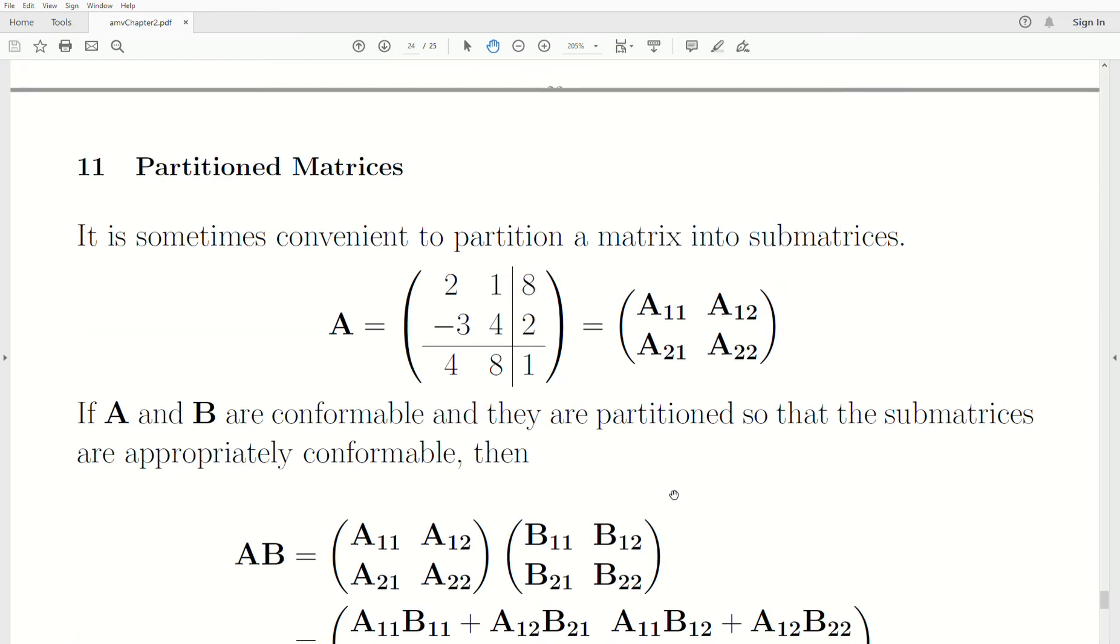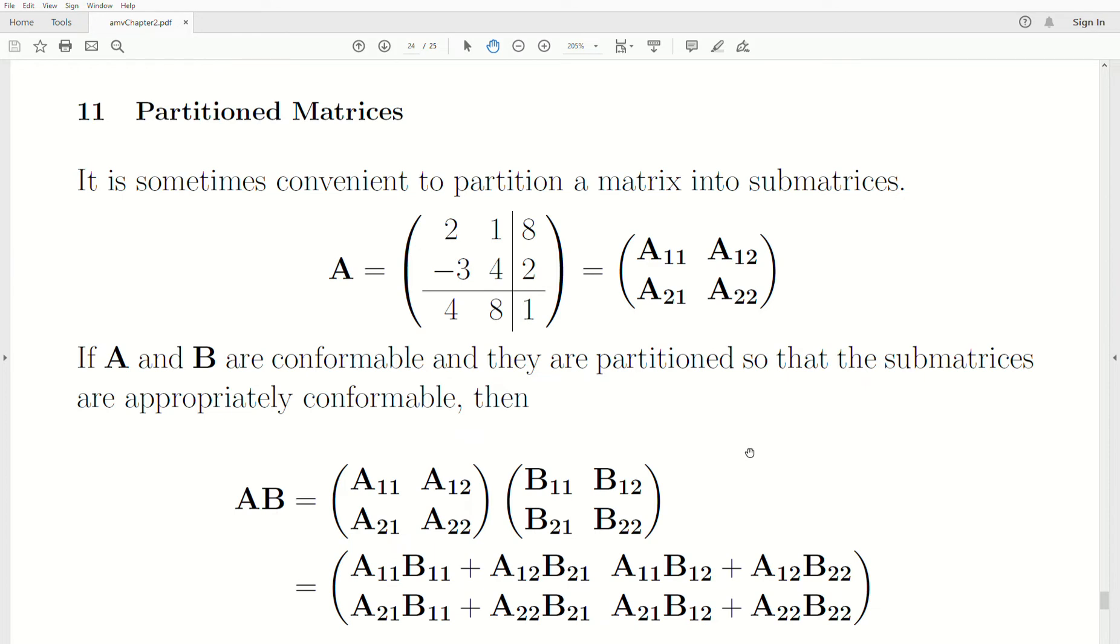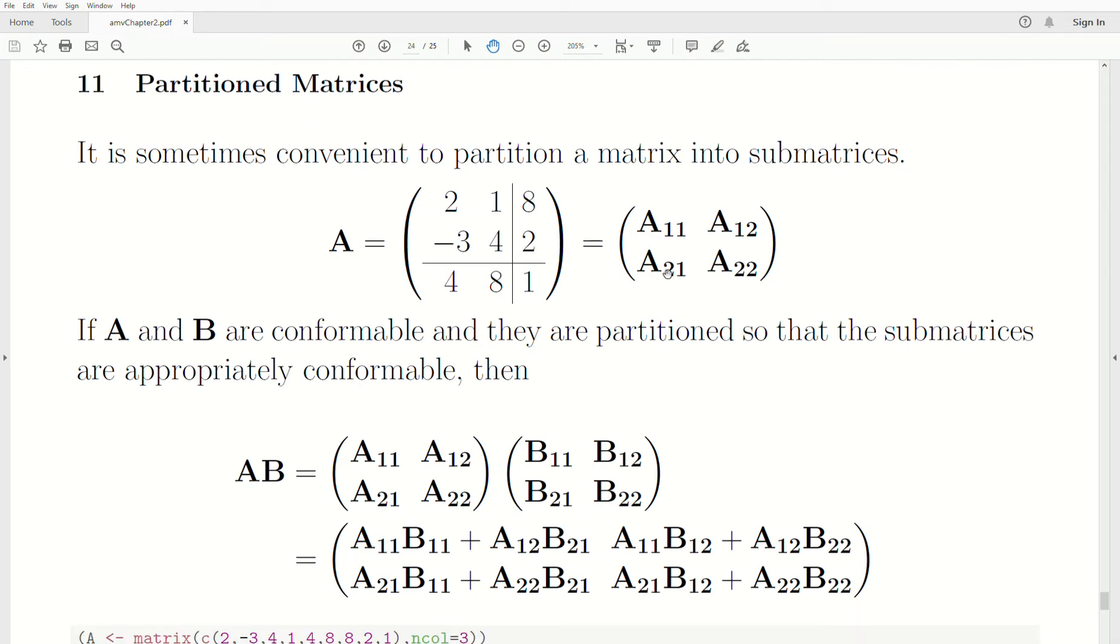Now, partitioned matrices play a part in linear models also and in multivariate analysis. So this will be a quick introduction to partitioned matrices. If we have a matrix A that's 3 by 3, and then we partition it. So we'll call this one A1, 1. And then this little vector, A1, 2. And this row vector, A2, 1. And this one, A2, 2. So this is a partitioned matrix.